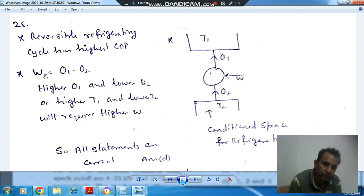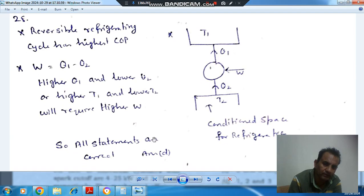Q1 minus Q2 equals W, or we can say T1 minus T2 equals higher W. Higher the T1, lower the T2, more is the gap, more is the work required. So all the statements are true. The answer is Option B.